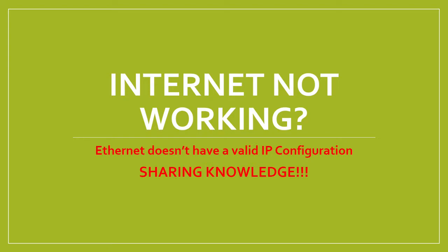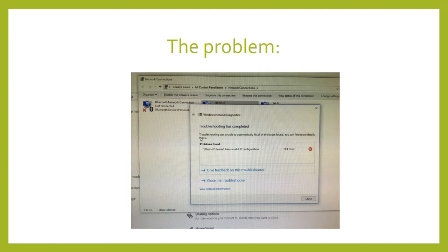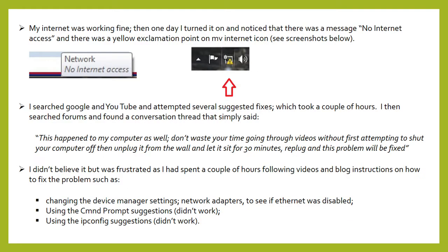Hi, I'm making this video after having some internet issues. If your internet isn't working and you're getting the message 'Ethernet doesn't have a valid IP configuration,' this video should help you. My internet was working fine, and then one day I turned it on and noticed there was a message saying 'no internet access' with a yellow exclamation mark. You can see the screenshots here as to what I'm talking about.